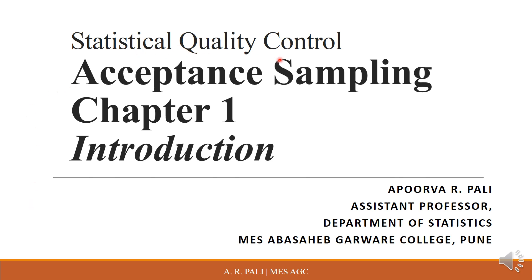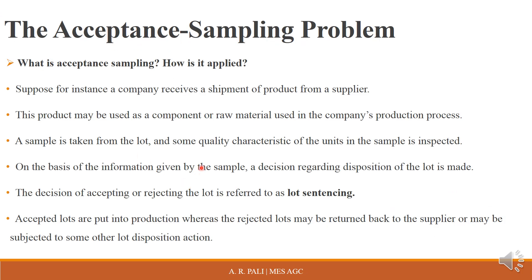Statistical quality control: acceptance sampling, Chapter 1 — Introduction. We look at the acceptance sampling problem: where we can apply acceptance sampling, what is the problem in which we need to apply it to get desired results, what is acceptance sampling, and how is it applied.